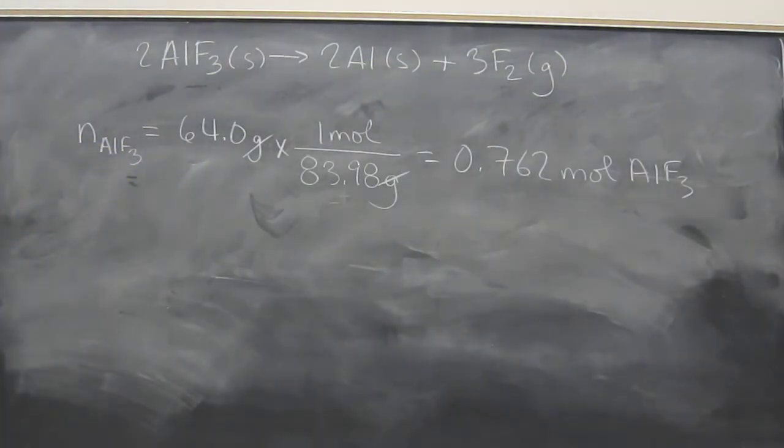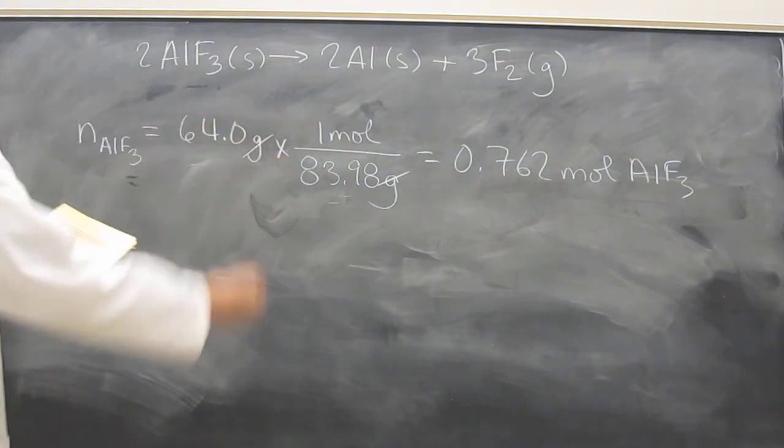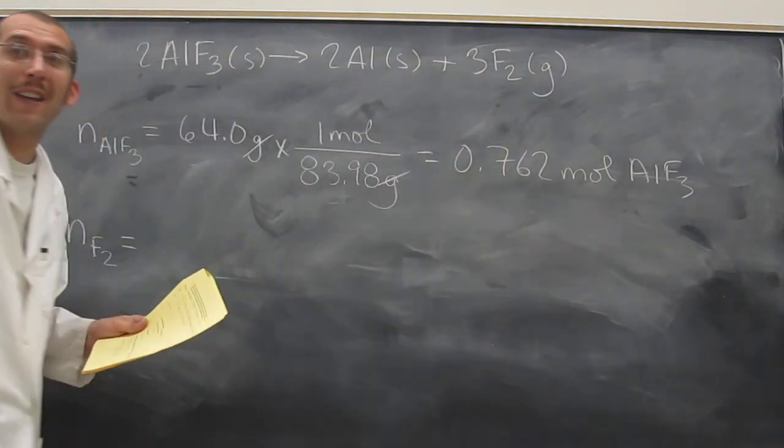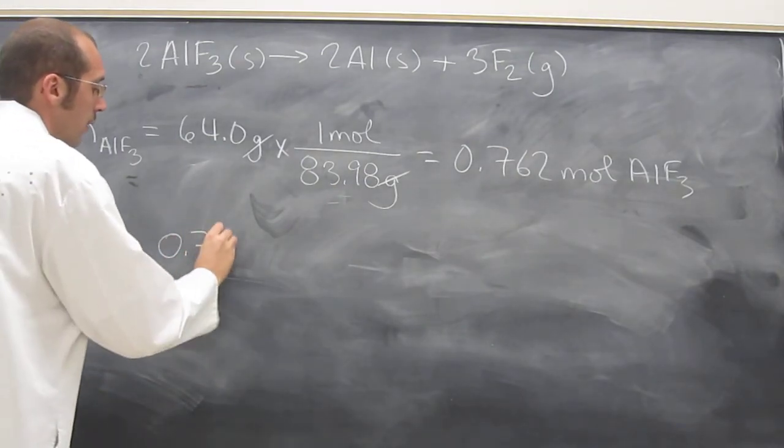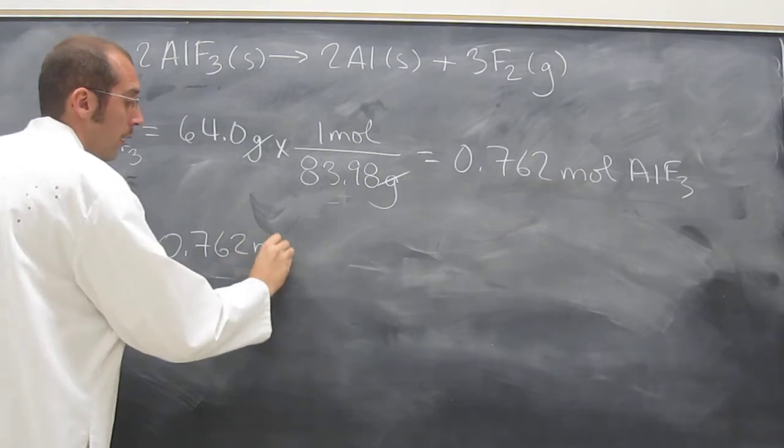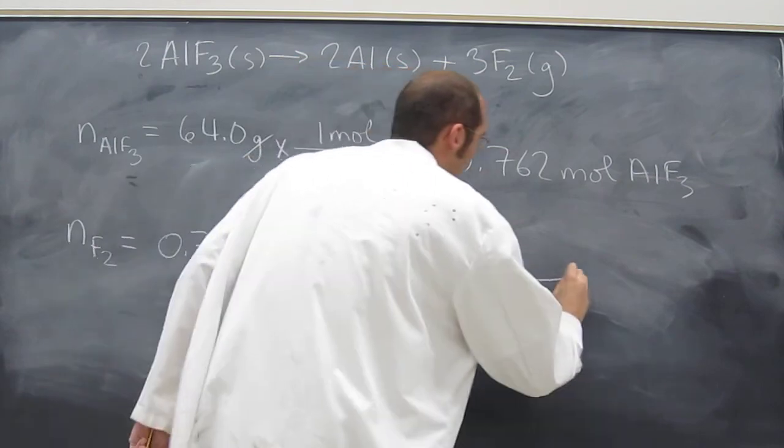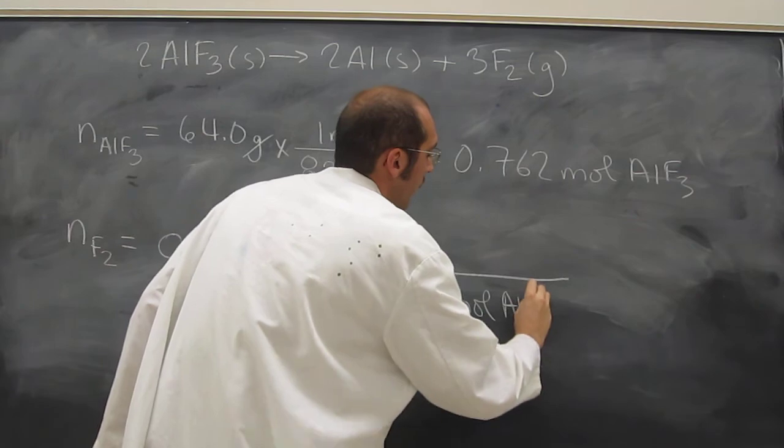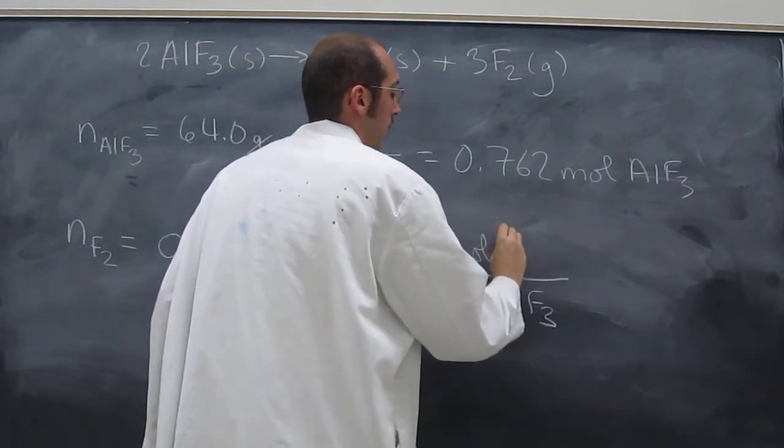And then it asks how many moles of fluorine will be formed? Well, the number of moles of fluorine, you use that number of moles of aluminum fluoride, and you know there's a two to three ratio. And that's that conversion factor that you get from the reaction equation. So it's going to be 0.762 moles AlF3, multiply that by 2 moles AlF3 on the bottom, 3 moles F2.